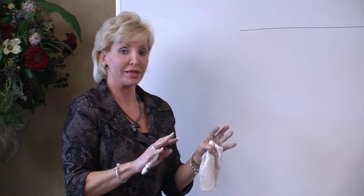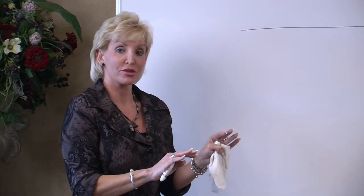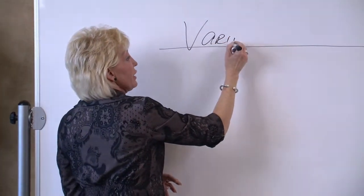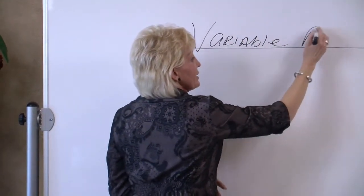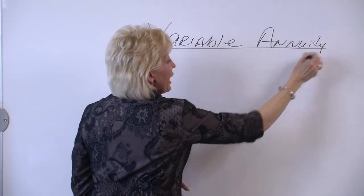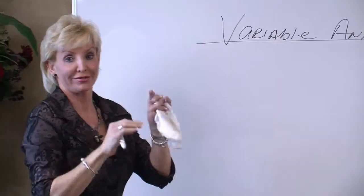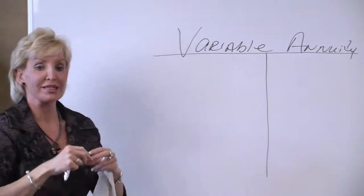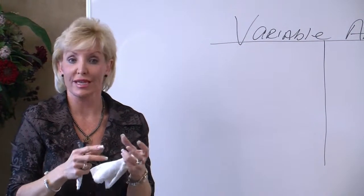Here's how a variable annuity works. You remember when we spoke about the managed money and the brokerage, and we spoke about mutual funds? Well, a variable annuity, what that means is that your money that you put in your account can go up or down, because your money is invested into mutual fund sub-accounts.